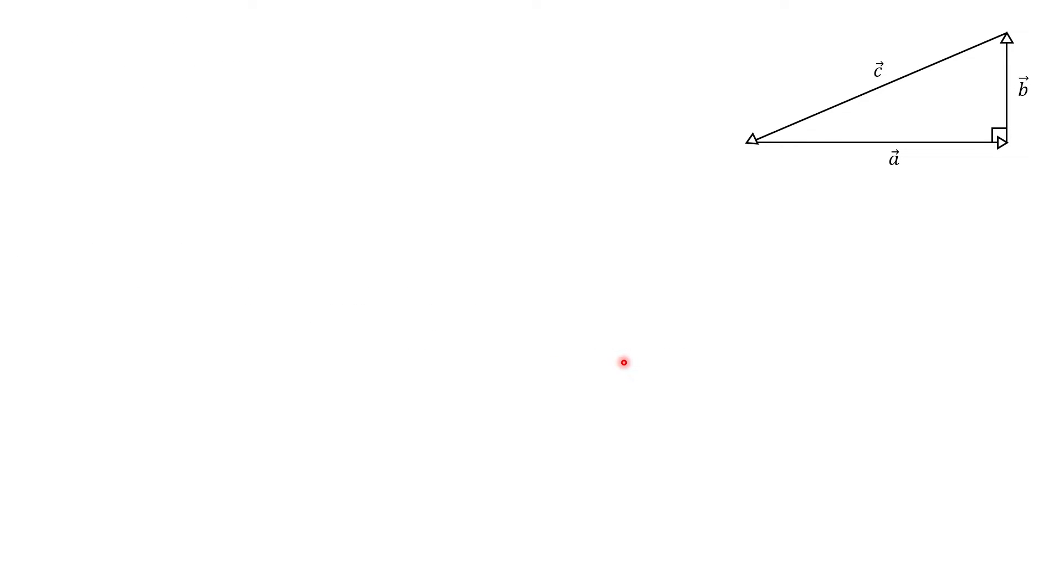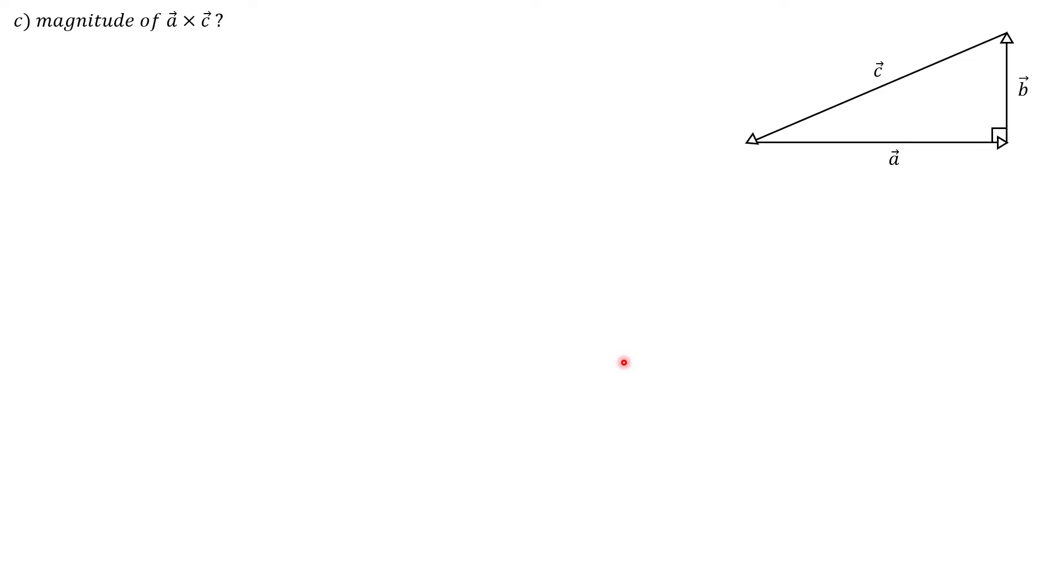So now if we clear this page, we can take care of part C, which is finding the magnitude of A cross C. Now you may be thinking, we can just do the exact same thing we did in part A, write out the equation for the magnitude of the cross product of two vectors, which is this right here, and that is totally a viable solution.